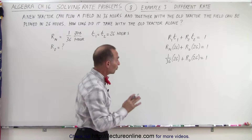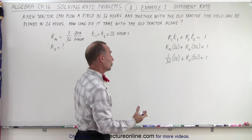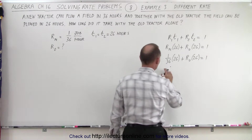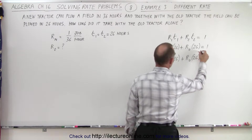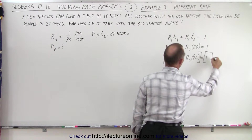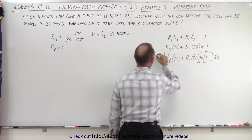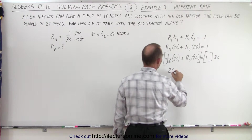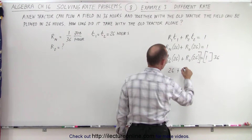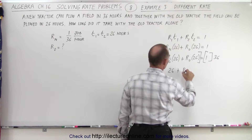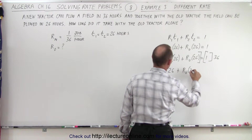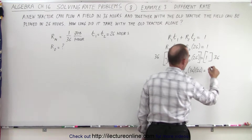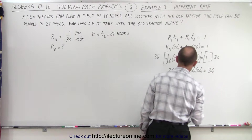Now we have to solve for the rate of the old tractor. To do that, we multiply both sides of the equation by the lowest common denominator, which is 36. Multiplying the left and right sides by 36, the 36 cancels out, and we get: 26 plus the rate of the old tractor times 36 times 26 equals 1 times 36, which is 36.